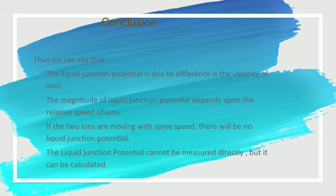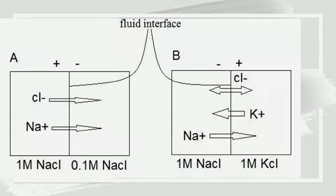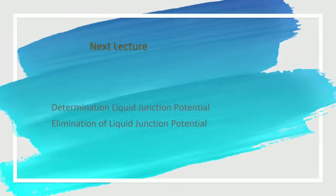Finally, liquid junction potential arises because the velocities of ions are different. If both are moving at the same speed, then liquid junction potential will not exist. If they are at varying speeds, we will definitely have liquid junction potential, which we cannot measure directly — a calculation or derivation is available which we will discuss in the next lecture. The next lecture will cover the determination and elimination of liquid junction potential.